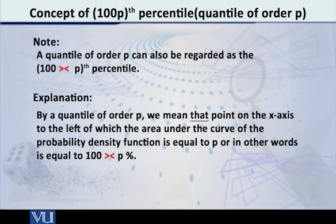I will talk about this. This is the pth quantile. Why do we call it 100 into pth percentile? The pth quantile, rather let me say the quantile of order p is that point on the x-axis to the left of which the area under the curve is equal to p.